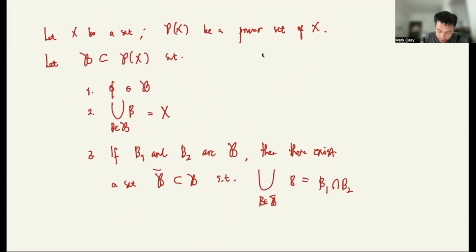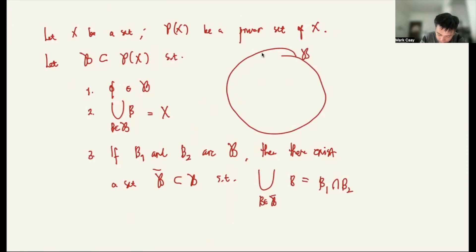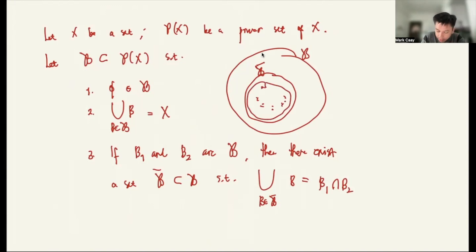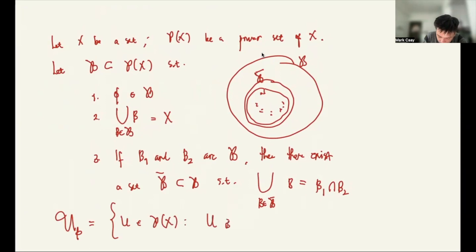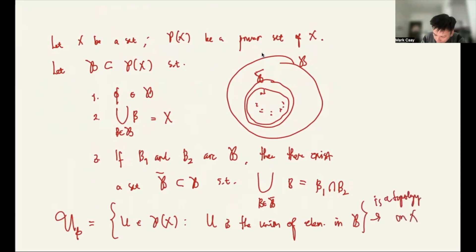The implication is that you can find a subset script B-bar of script B such that all its elements, when you take their union, give the same result as B₁ ∩ B₂ — so they are contained within it. So if we define U_B as the set of U in the power set of X such that U is the union of elements in B, then this is a topology on X. And script B is the basis for it.